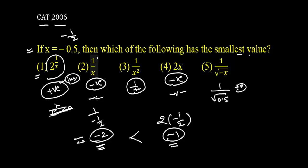So our answer is option number 2. The least value among the options with x equal to minus 0.5 is the easiest one.